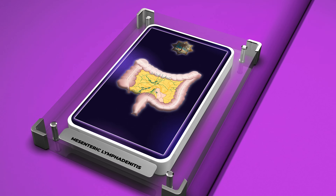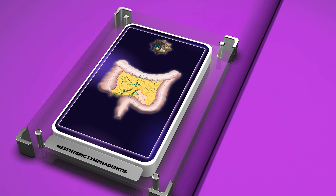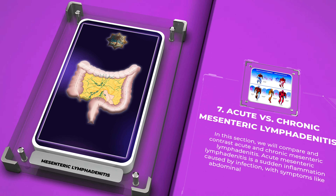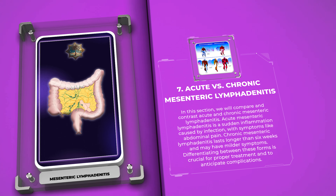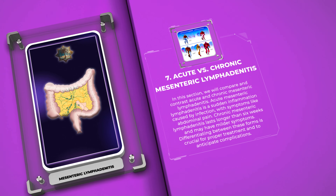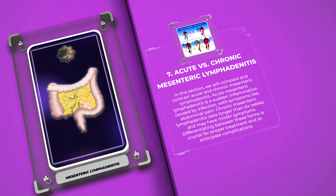We will compare and contrast acute and chronic mesenteric lymphadenitis. Acute mesenteric lymphadenitis is a sudden inflammation caused by infection, with symptoms like abdominal pain. Chronic mesenteric lymphadenitis lasts longer than six weeks and may have milder symptoms. Differentiating between these forms is crucial for proper treatment and to anticipate complications.